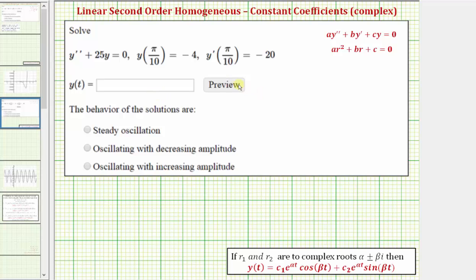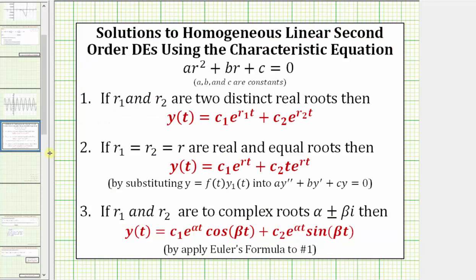We want to solve the initial value problem involving a linear second order homogeneous differential equation with constant coefficients, which means the differential equation fits this form, where a, b, and c are constants. We can solve this type of differential equation using the characteristic equation: a r squared plus b r plus c equals zero.